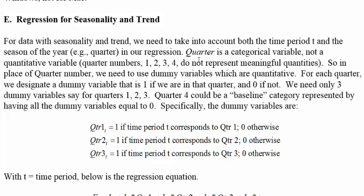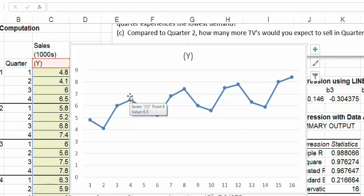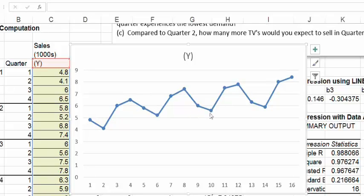Previously we had only one independent variable: time period was the independent variable and sales was the dependent variable. In this case, we need multiple regression because besides the time period — which captures the trend — there is also the quarter. Which quarter you're in influences your sales: if you're in a peak demand quarter like the holiday season (quarter four), your sales will be higher than usual; if you're in quarter two, sales will be lower.